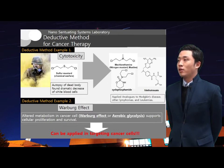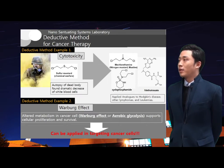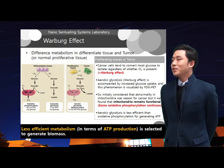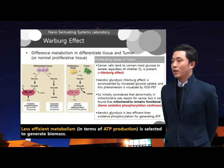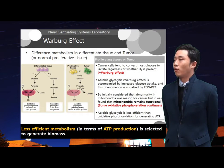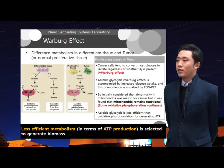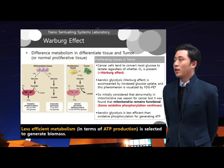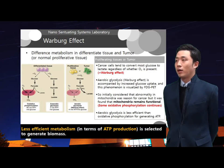Cancer cells have altered metabolism, which is called the Warburg effect or aerobic glycolysis. By controlling metabolism, it will be possible to specifically target cancer cells. Cancer cells tend to convert most glucose to lactate no matter how much oxygen is available. This process is called aerobic glycolysis or the Warburg effect. In this process, only about 10% of the ATP generated compared to oxidative phosphorylation. Aerobic glycolysis is less efficient than oxidative phosphorylation for generating ATP because proliferating cells are required to generate not only ATP, but also various biomass.